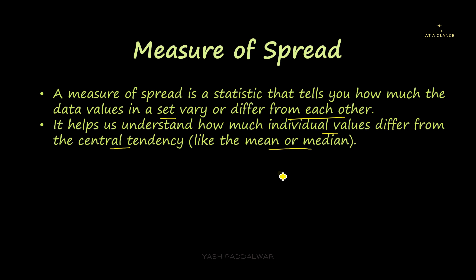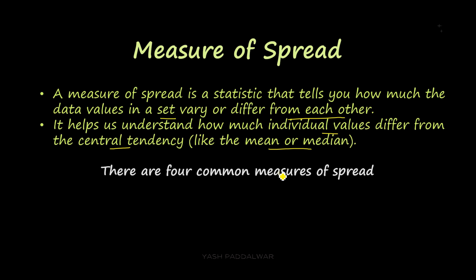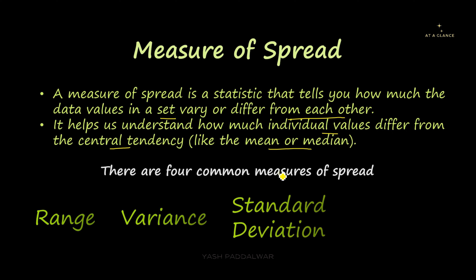There are four common and most important measures of spread. The first one is range, the second one is variance, the third one is standard deviation, and the fourth one is quartiles. Quartiles itself has two to three parameters we are going to look into. Now let's start with the very first measure of spread, that is range.